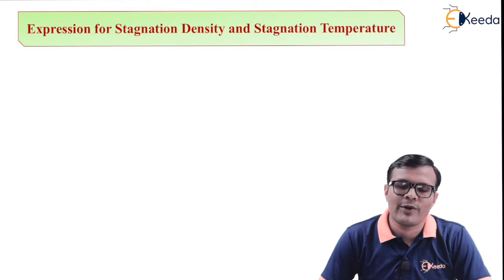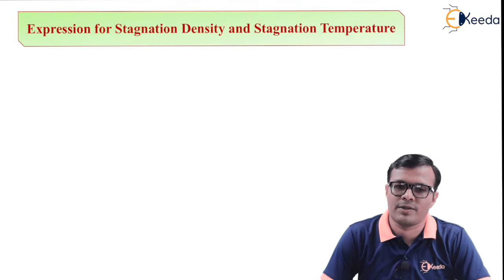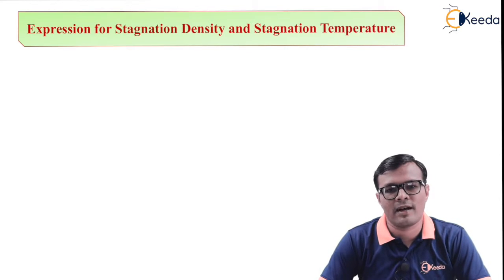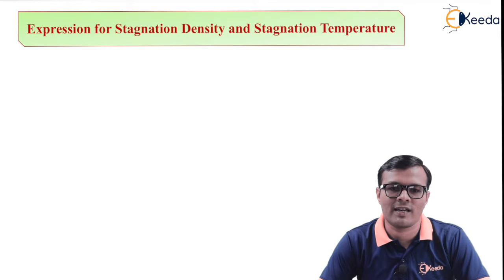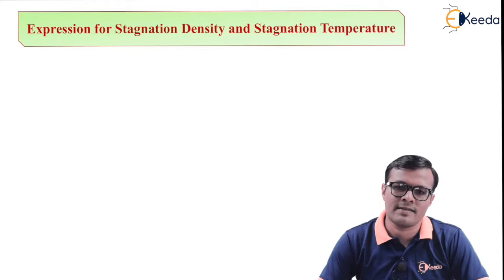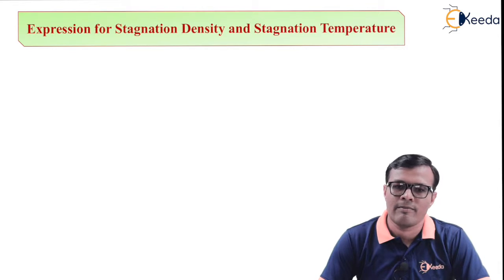In this we are going to derive an expression for density and temperature at stagnation point. We all know that stagnation point is that point where local velocity is zero. Due to this, the effect is increased in the remaining two terms. So now let us see what actually happens and how it is increased by considering various conditions.